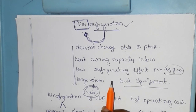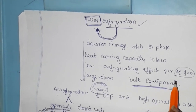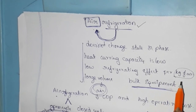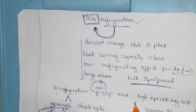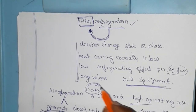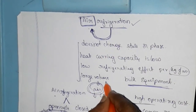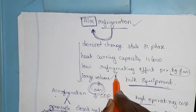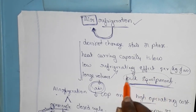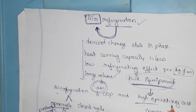Because a large volume of air is required, the bulk equipment needed will be very large, and the total cycle cost will increase. If bulk equipment is used, the total operating cost is high.